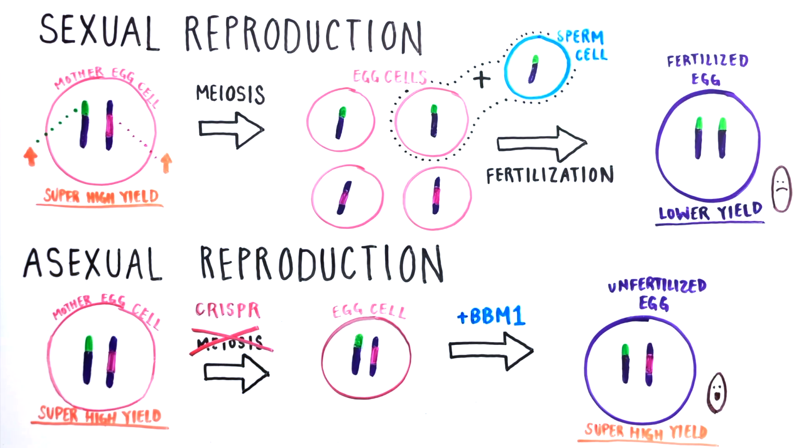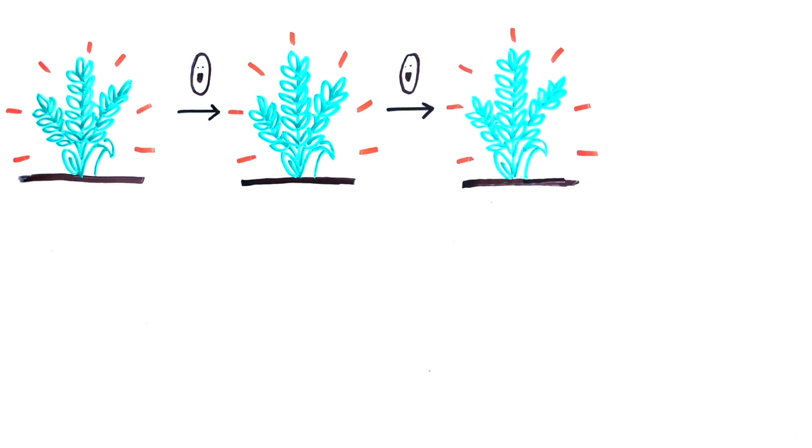In the end, each seed carries a perfect clone of the original plant. This breakthrough means that hybrid plants with desirable traits will produce seeds that can be planted and grown into plants that are exact clones, with high yields year after year. Even great grand plants will still be clones of the original rice plant.